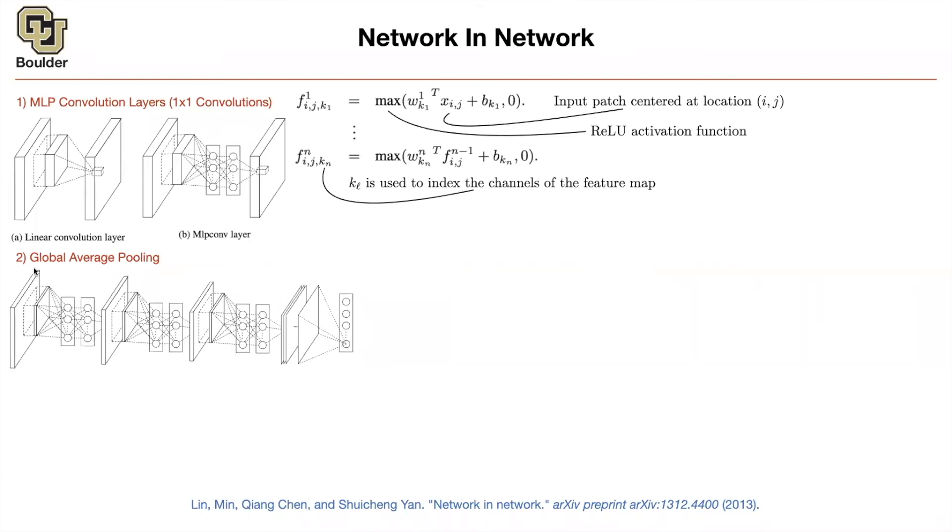Sorry, would you mind just going over global average pooling once more real quick? Yes, of course. Thank you. So in the end, of whatever operations that you had, you're going to end up with a tensor. And your tensor is going to have a height, it's going to have a width, and it's going to have the number of channels that you have. One channel, two channel, three channel, up until C channels.